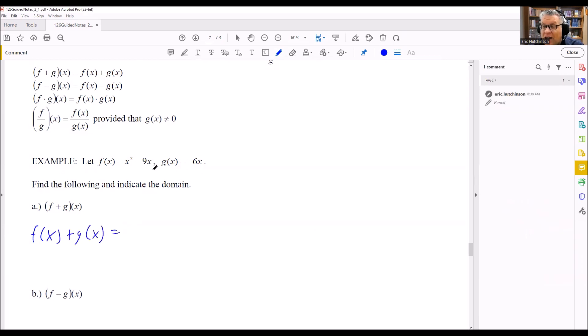Which means we're just going to add the two functions together. So I have x squared minus 9x. I'm adding the g of x, which is negative 6x. We can simplify this to x squared minus 15x. So now this is going to be our f plus g of x.